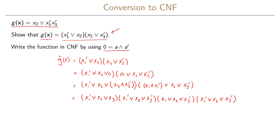We again have two expressions that are the same, so we remove the duplicate. This expression is our CNF — our conjunctive normal form. The maxterms we have here are denoted by capital M: this is M4, this one is M5, and this one is M1.